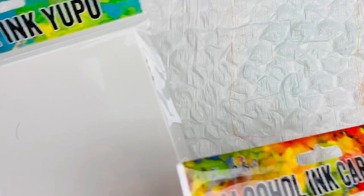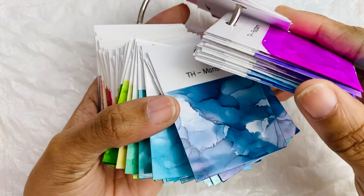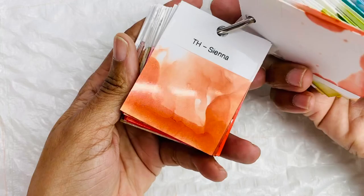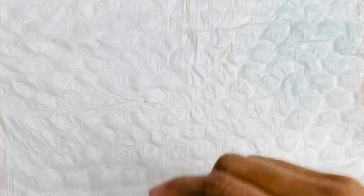You could also use alcohol ink UPO. I would recommend that you use whatever type of surface you regularly use with your alcohol ink so you can get a true vision of how the color will look on the piece of the surface that you use most frequently because I think that is the true purpose of having a swatch and understanding of how the color is going to look on the piece of paper that you use.